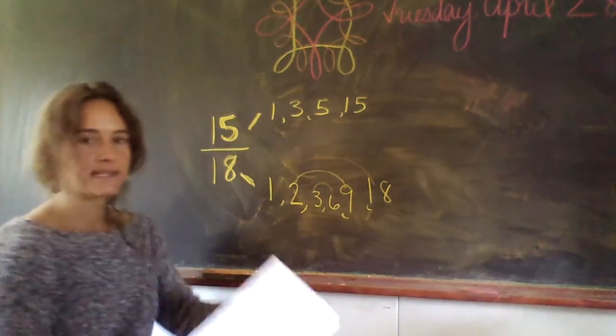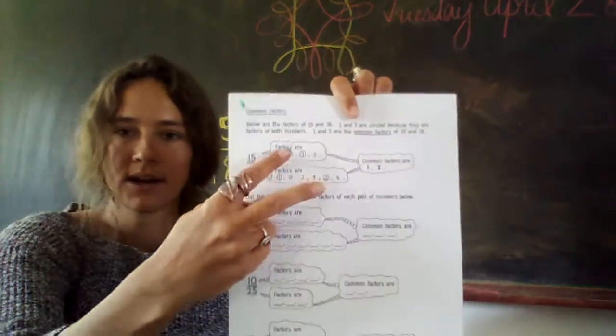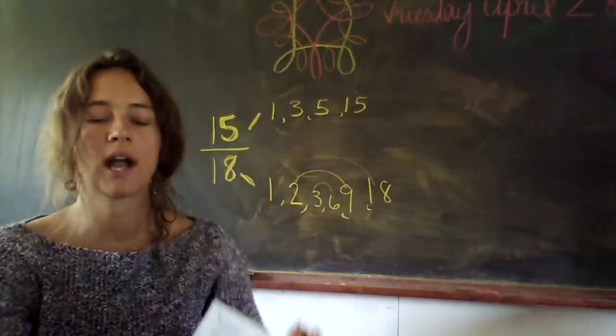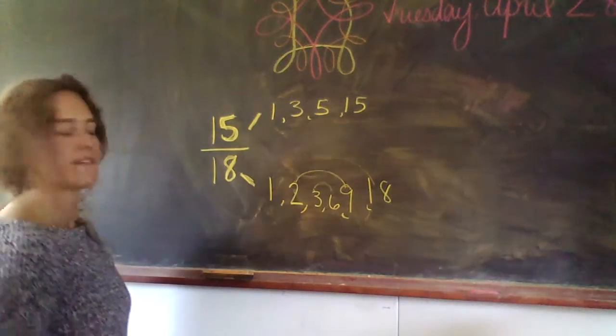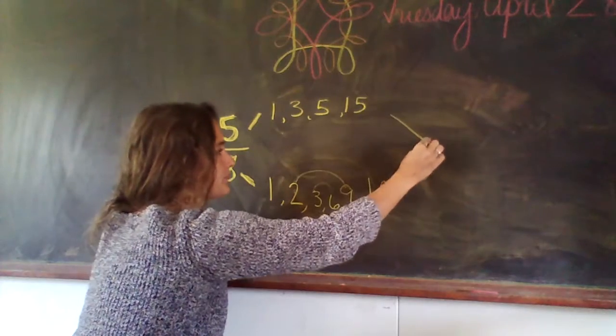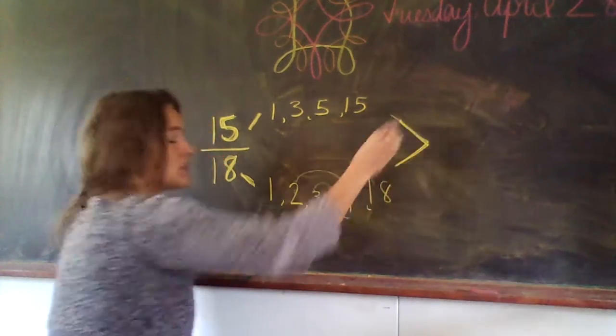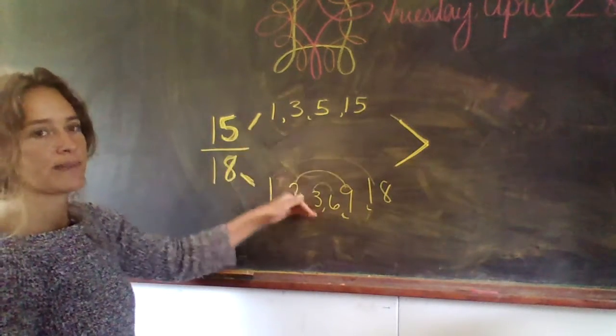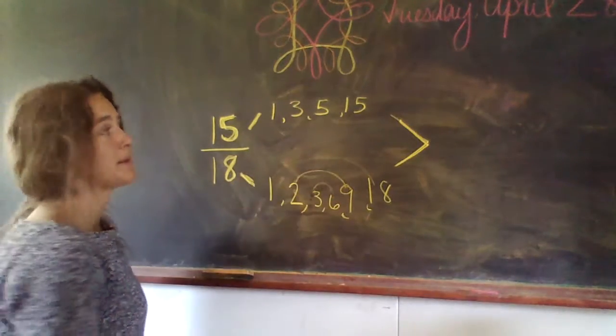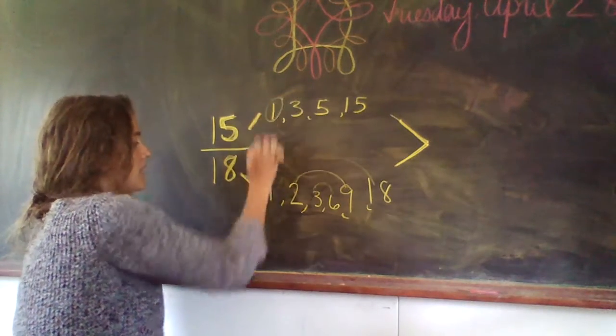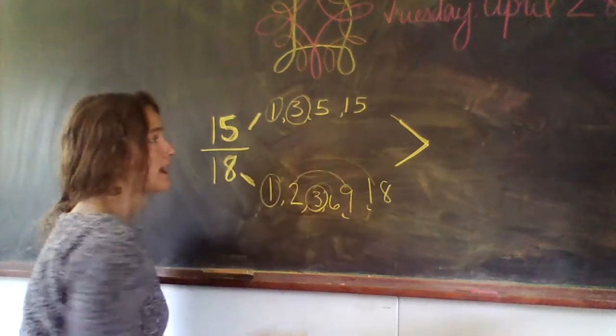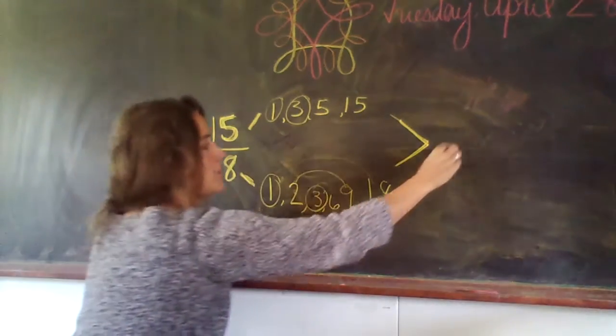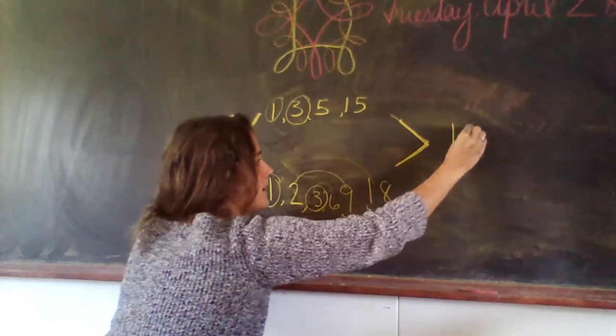Then what it's telling you to do right here is that bubble is our common factors. Which numbers do they have in common? Which numbers are the same between the two numbers? I see 1 and 1. I see 3 and 3. So that is what we put over here, 1 and 3.